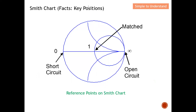Let's start by discussing some of the key positions on the Smith Chart. In Part 1, I discussed the resistance line, which means there is no reactance value. I want to further discuss three points. First, a resistance value of zero ohms, which falls on the extreme left of the Smith Chart — this represents a short circuit. On the other side, when the resistance is infinity, it represents an open circuit.